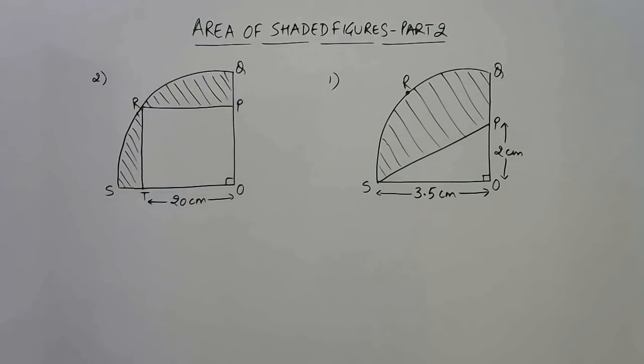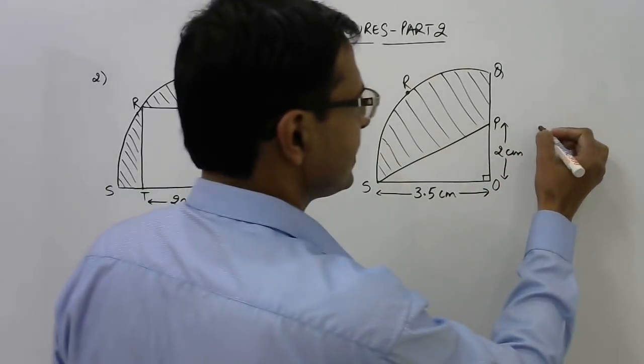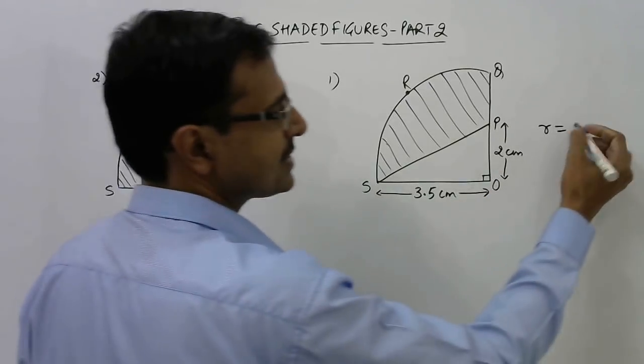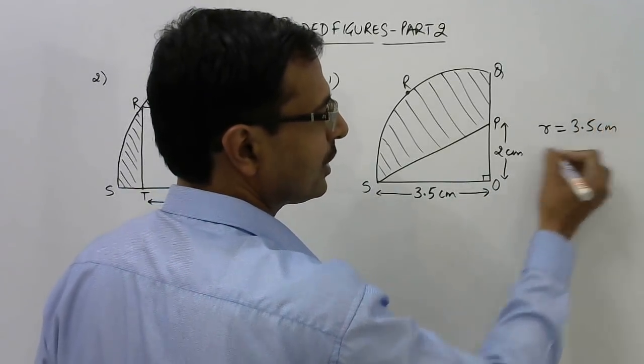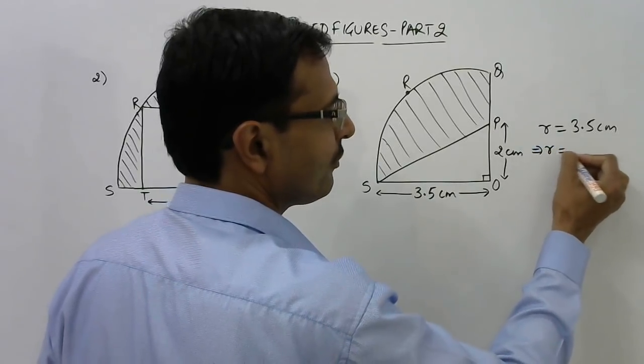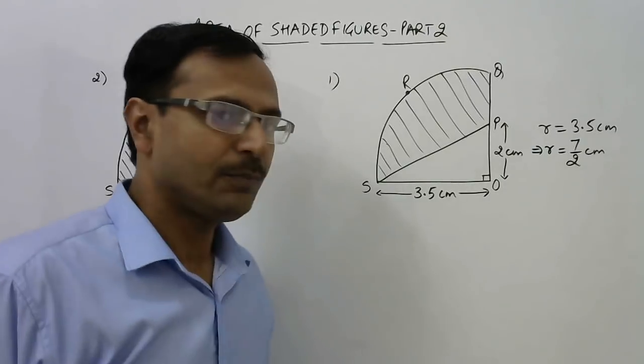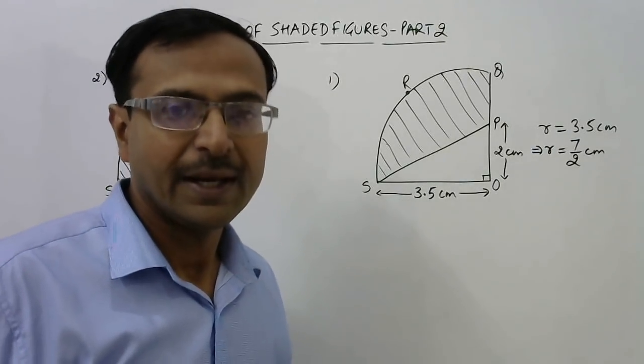Here, the radius in this case, the radius of the quadrant, that is OS, is 3.5 centimeters. You can easily convert into fractions: 7/2 centimeters. That is because the value of pi is taken to be 22/7, so this 7 is likely to be cancelled out.